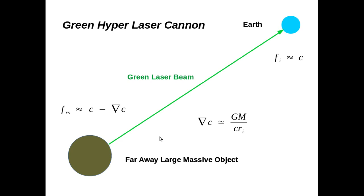So, here we have it, we know the frequency is proportional to the speed of light. So, FI, initial frequency, we measure our laser, hyperlaser cannon frequency, it's going to be proportional to the speed of light on Earth, which is C.